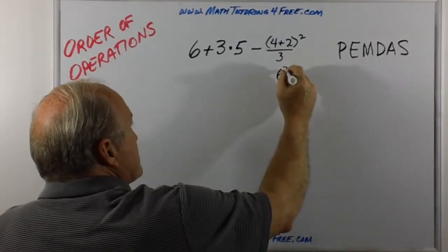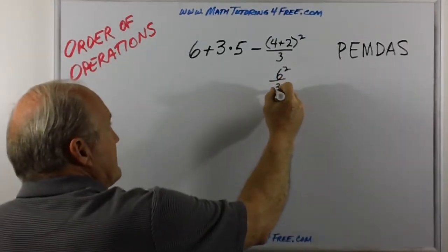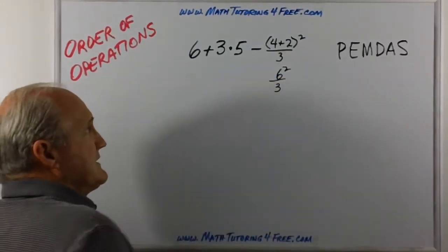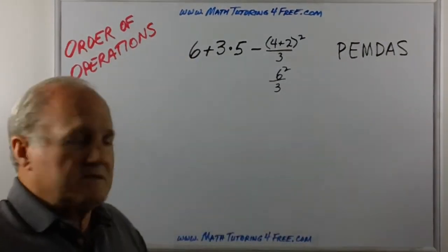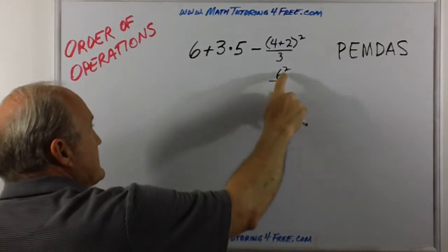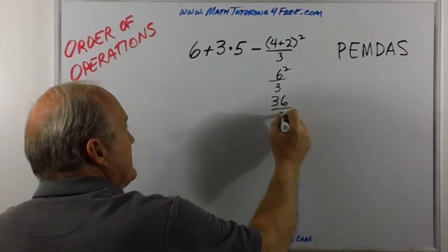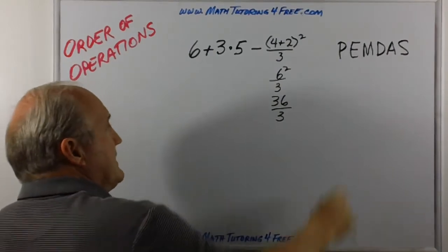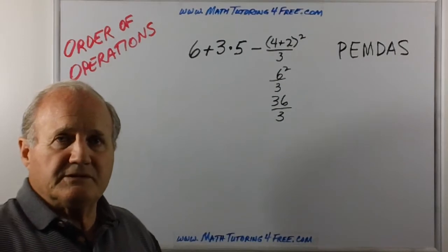six squared. So that's now six squared over three. The second thing, once we've gotten rid of the parentheses, is to do any exponents. Well, in this case, we've got six squared. So that becomes 36 over three. After the exponents,